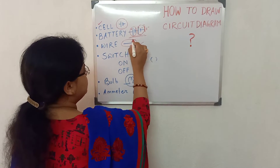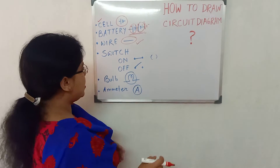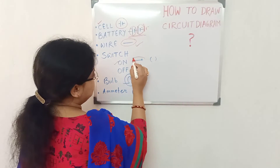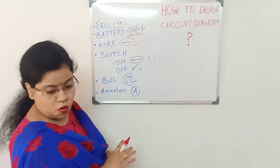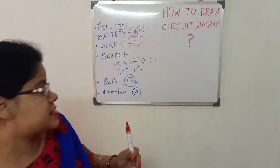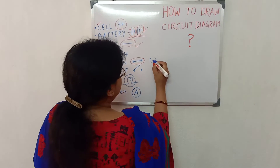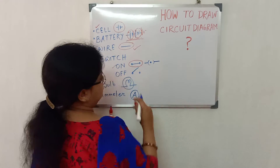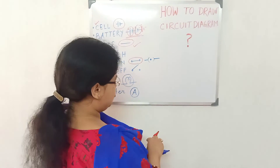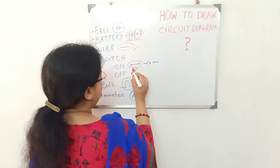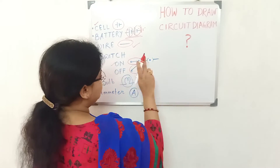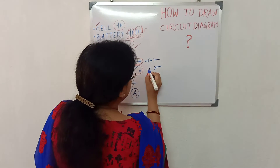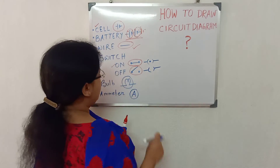A wire is represented by just a straight line. Switch — when on, it can be represented like this, or sometimes it is represented differently. Different books show it differently. And this is an open switch. In some books, you can see it is shown like this — open switch.